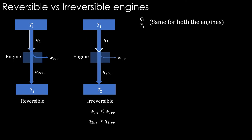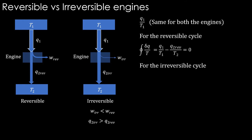Different amounts of heat are rejected to the body at low temperature T2. For the reversible cycle, the cyclic integral of δq divided by T is the summation of q1/T1 minus q2 reversible/T2, and we have seen that it equals zero. In the irreversible case, it equals q1/T1 minus q2 irreversible/T2. In the reversible case, q1/T1 equals q2 reversible/T2.